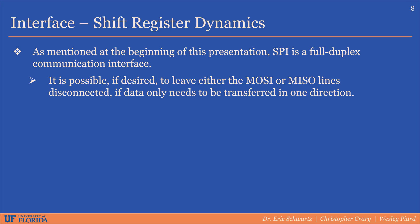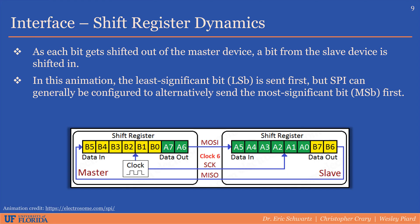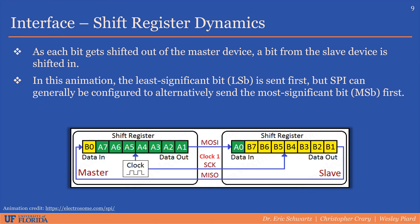SPI is a full duplex communication interface, so data can be transmitted and received simultaneously. To implement the protocol, a shift register is generally utilized by both the master and slave devices, all controlled by the same clock signal. Data is shifted out of the master bit by bit into a slave via the MOSI line, while at the same time data is shifted into the master from a slave via the MISO line. Note that while the animation shows the least significant bit shifted out first, the most significant bit can also be shifted first depending on the application and slave device requirements.